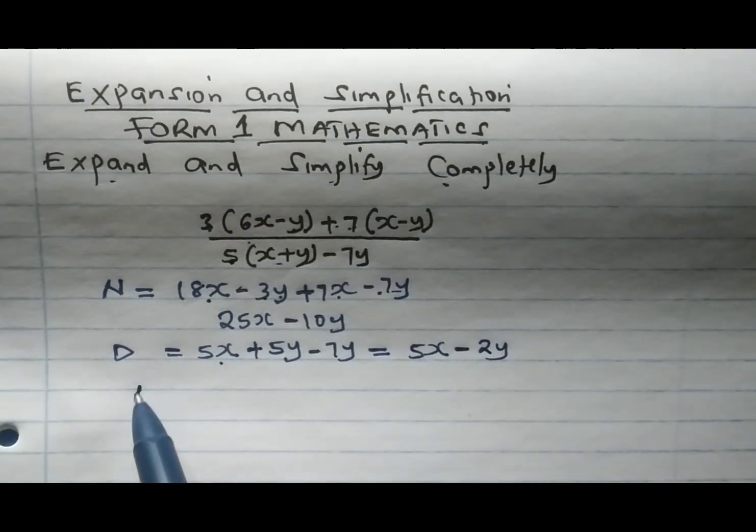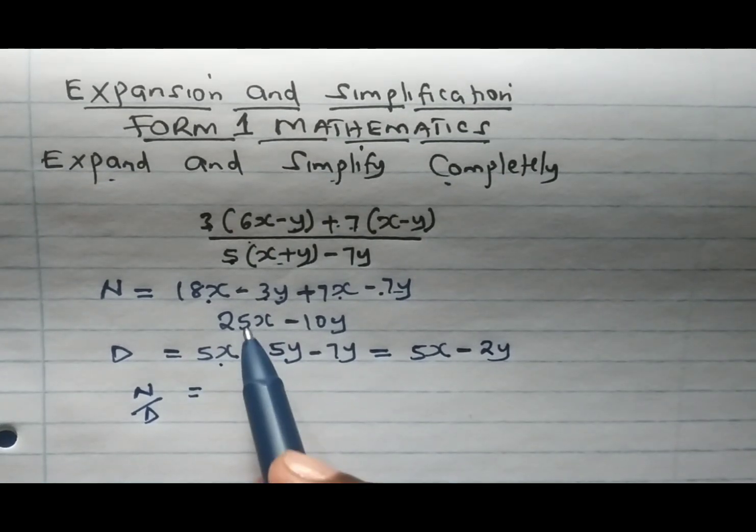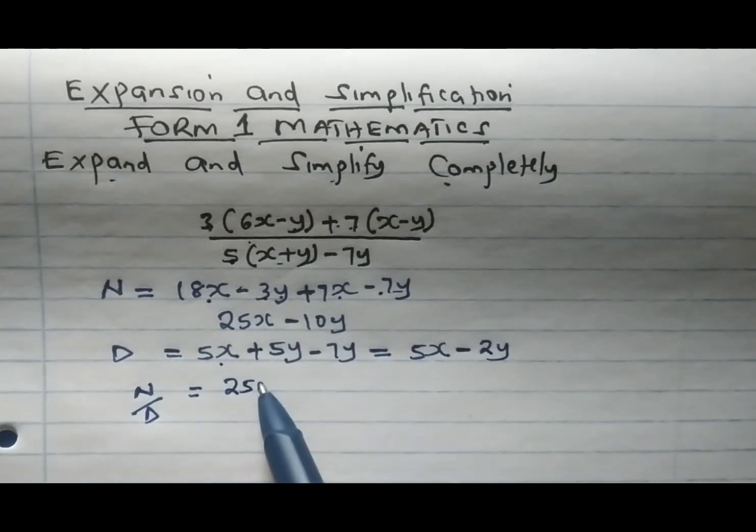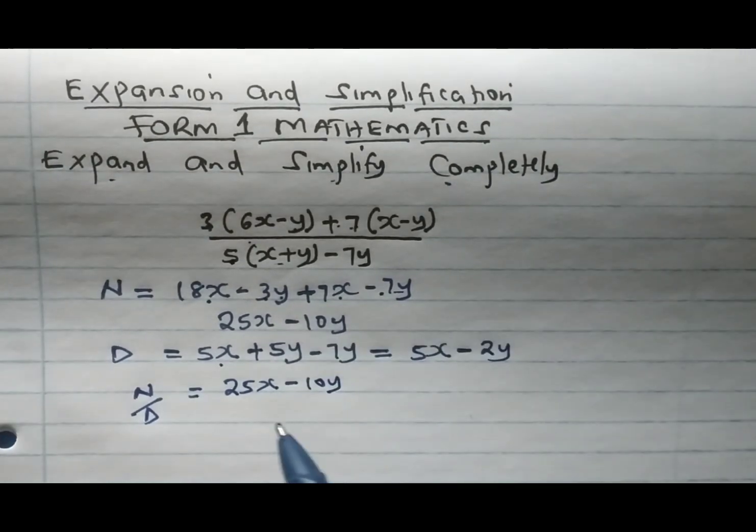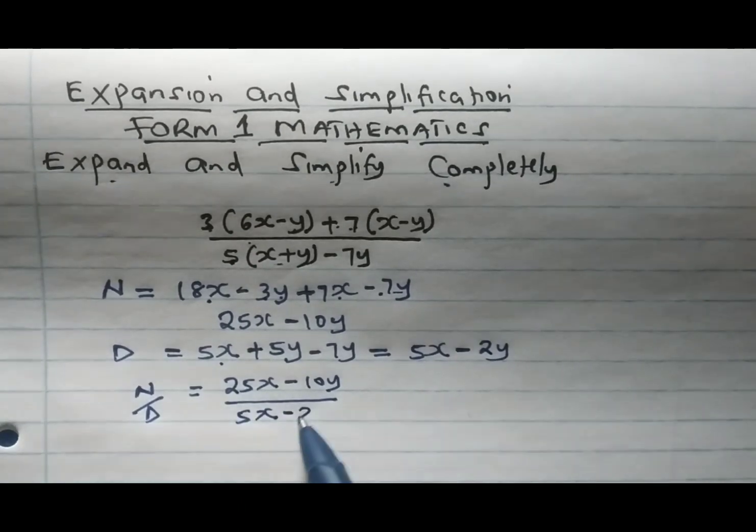From there we combine the numerator and denominator to give us: the numerator is 25x minus 10y, divided by the denominator which is 5x minus 2y.